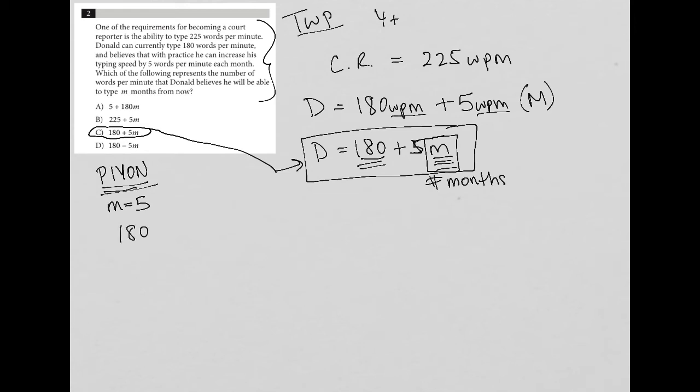If he's typing 180 now, and we know he's going to increase by five words per minute per month, and there's five months he's working on this, we expect him to improve by 25 words per minute. So altogether, 180 plus 25 gives us 205. This is our answer.